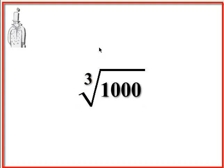But if there is a number there, that means we've got to find a number when multiplied by itself three times will equal a thousand. So let's see what we can do here.